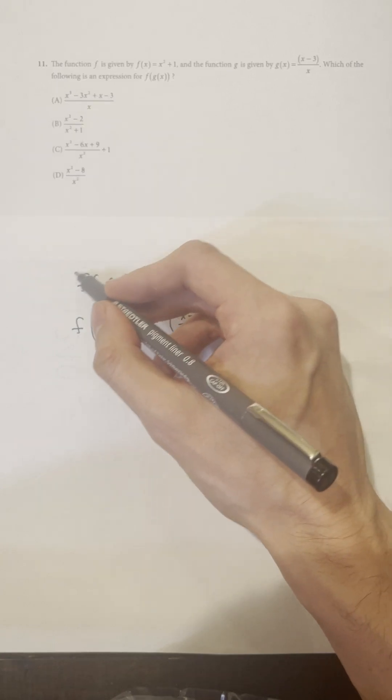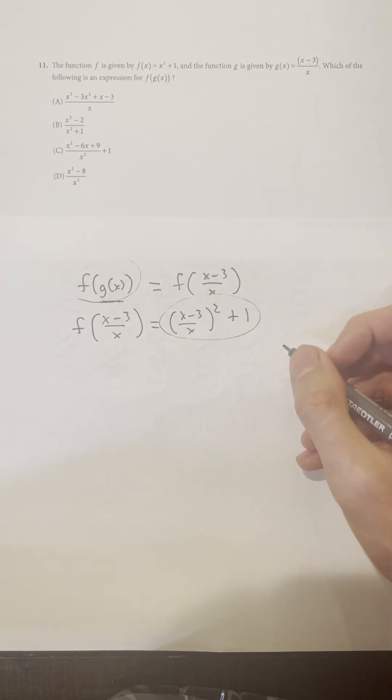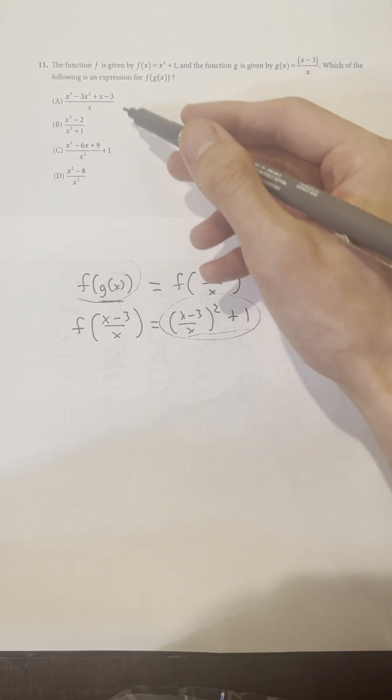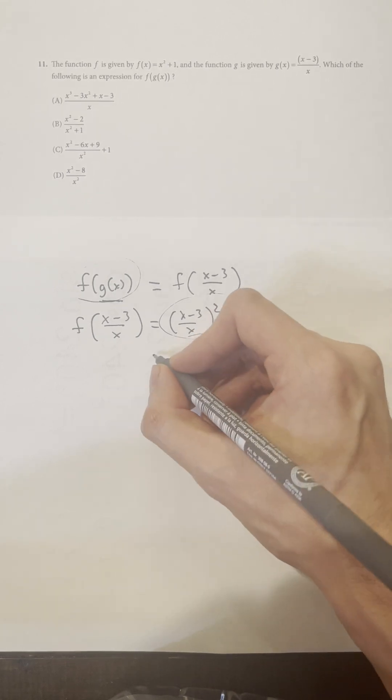Okay, so that's what f of g of x simplifies to, but is this an answer choice? No, none of the answer choices have parentheses, so we need to get rid of them here. How do we do that?